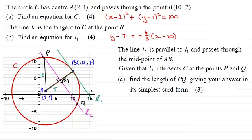So because I've got a right-angled triangle here, I can use Pythagoras' theorem, get the length of PM, and then double it to get the length of PQ. That's where we're going with this.